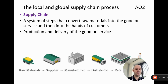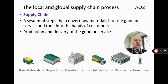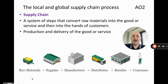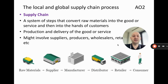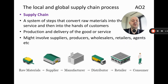As you can see on the diagram, the supply chain takes raw materials all the way until we get into the hands of the consumer with the final good or service. Things that might be involved include suppliers, producers, wholesalers, retailers, agents, and so on.